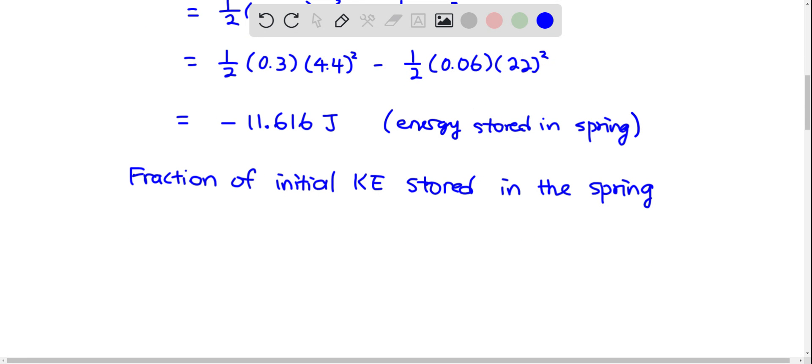Which is why the fraction would just be ΔK divided by Ki. So 11.616 divided by half times 0.06 times 22 squared. You calculate this, you get 0.8. 0.8 is the answer for part B.